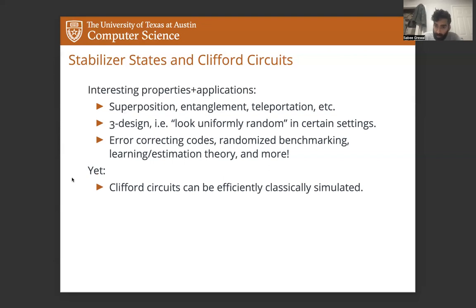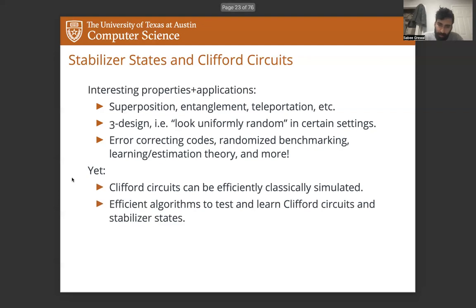And despite this, we know that Clifford circuits can be efficiently classically simulated. This is the Gottesman-Knell theorem. So any quantum algorithm that only makes use of Clifford gates is not going to give you any speed up over classical computing. And we also have efficient algorithms to property test and to learn both Clifford circuits and stabilizer states. So we have a pretty good handle on these objects.